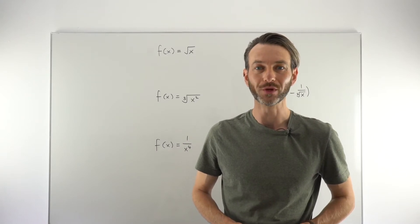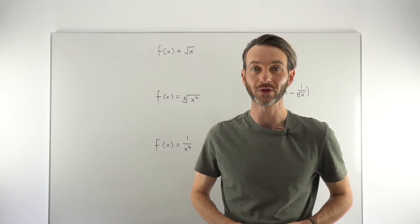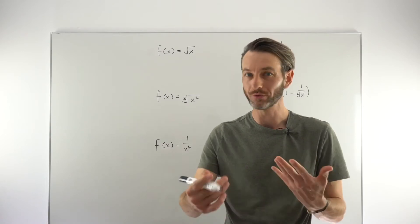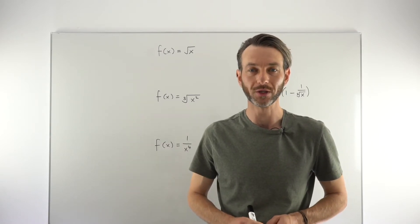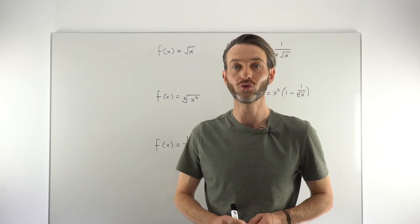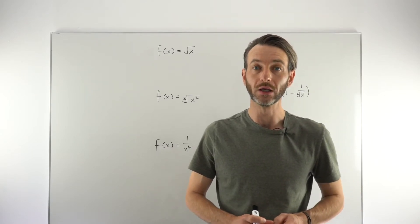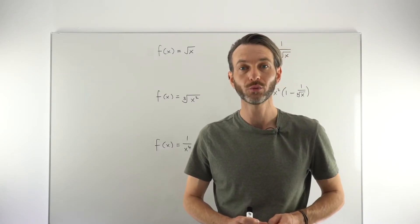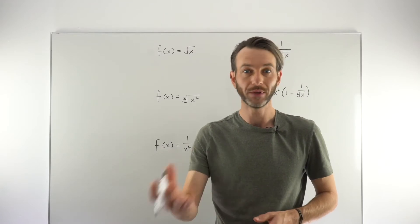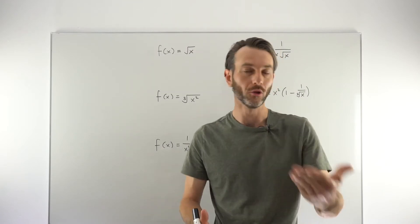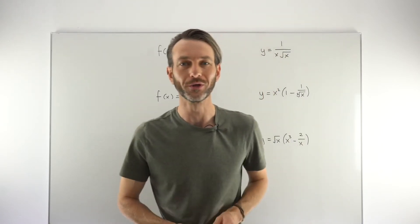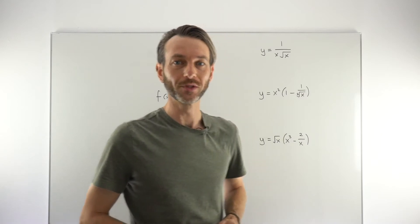The power rule is for differentiating polynomial-style functions, and then we've got a bunch of other rules for different function types. For example, we use a chain rule for differentiating composite functions. We've got rules for trigonometric functions, exponential functions, and logarithmic functions — a whole bunch of rules for different function types.